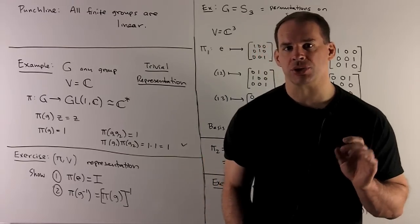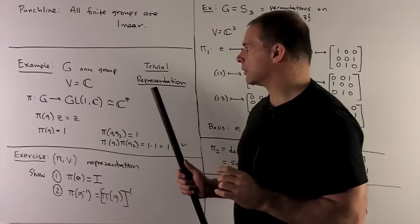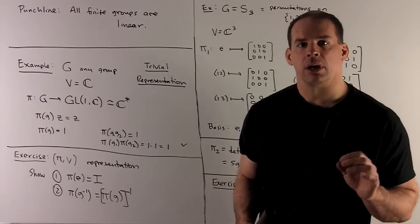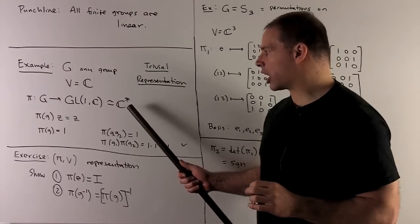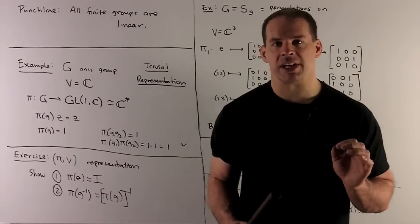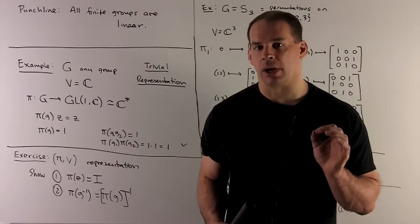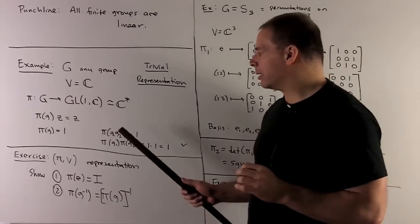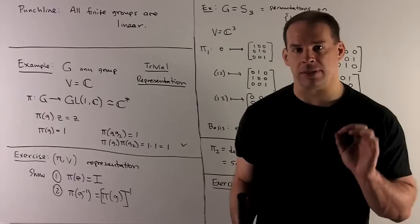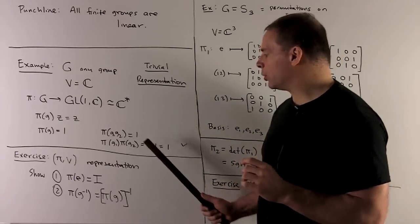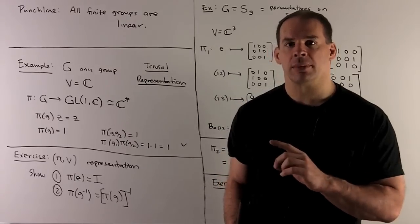Let's take a look at some examples of representations. First example: the trivial representation. G can be any group, our vector space is going to be ℂ, and π is going to carry our group to ℂ*. For the trivial representation, π carries every group element to 1. For the homomorphism property, π of the product g₁g₂ goes to 1, and if we split it up we get 1 times 1, which is 1. So this is a homomorphism, and we have a representation.